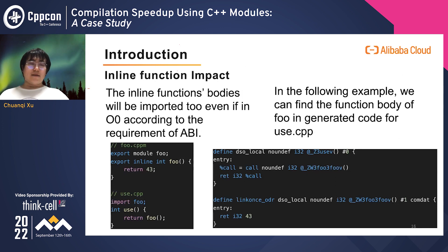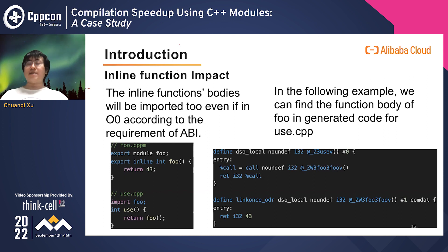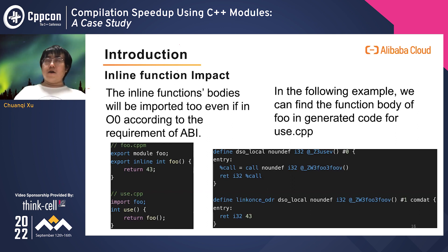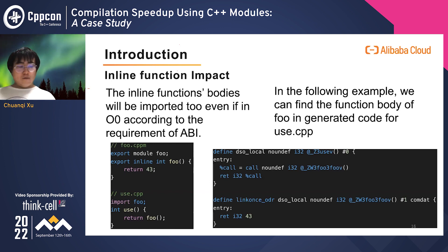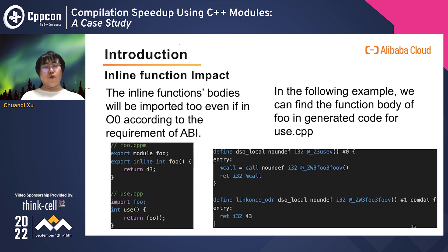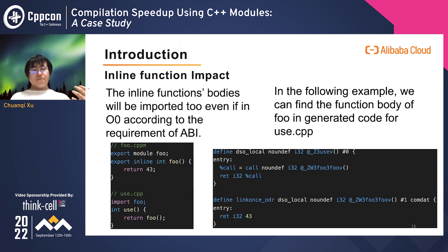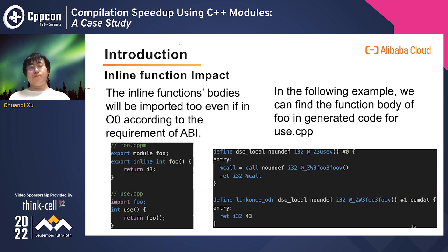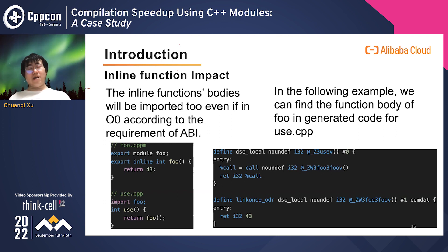Inline function bodies will be imported even at O0 due to API requirements — inline has special semantics that impact the API. So before we change the API requirement, inline functions must be kept even at O0. In this example, we declare module foo in foo.cppm and export an inline function. In use.cppm, even at O0, we can still see the function body of foo, meaning in this case we wouldn't get much speedup.